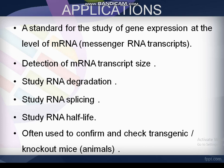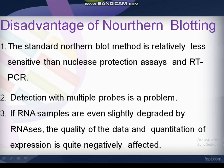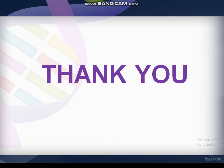Applications of northern blotting: it is used to study RNA degradation, RNA splicing, and RNA half-life. It is often used to confirm and characterize transgenic knockout mice, and serves as a standard for the study of gene expression at the level of mRNA transcripts. Disadvantages: detection with multiple probes is a problem; if RNA samples are even slightly degraded, the quality of data and quantification of expression is negatively affected.